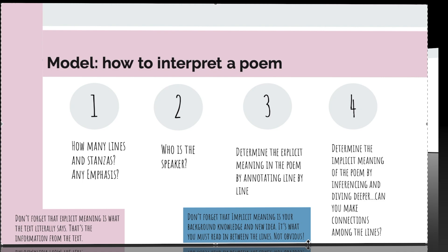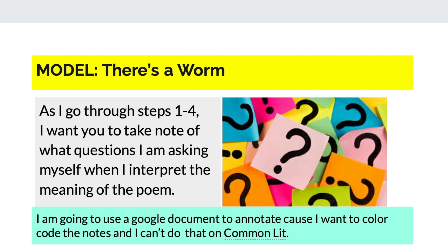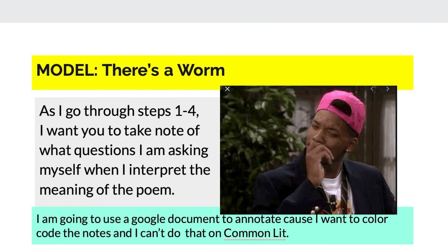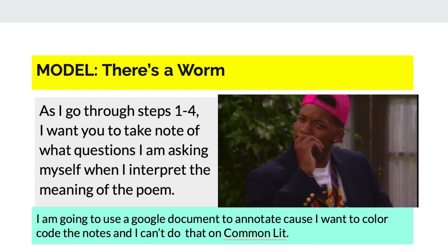For today's lesson I'm going to model with the infamous poem 'There's a Worm.' As I go through steps one through four, I want you to take note of what questions I'm asking myself when I interpret the meaning of the poem. I'm going to be diving very, very deep. You should be asking yourself: what is Miss Pickens thinking out loud as she reads this poem? I'm going to use a Google document to annotate because I want to color-code the notes. While I may be using a different format today, I still want you to use the annotation tool on CommonLit.